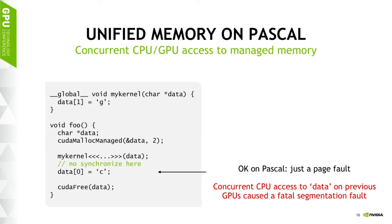Another feature enabled by Pascal is simultaneous CPU and GPU access to unified memory. In this example we have cudaMallocManaged, the same example as before except we've removed the cudaDeviceSynchronize. The GPU launches a kernel but the CPU doesn't wait before touching that memory. Previously this caused a seg fault because we couldn't guarantee coherence and the GPU couldn't page fault to get a page back if the CPU took it. Starting with Pascal, this works — though you still need to properly synchronize if there are dependencies. If the CPU and GPU are accessing different parts of the array, you can potentially run them simultaneously.